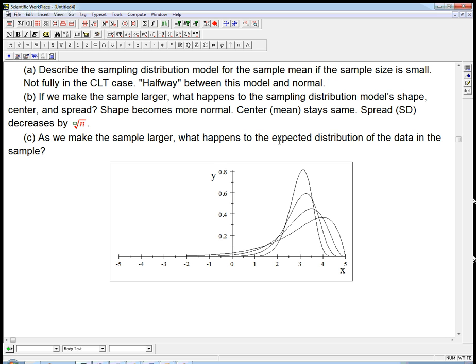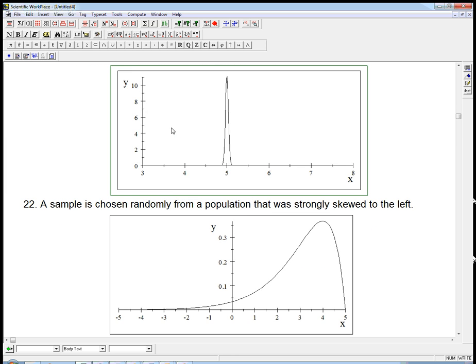Now, as we make the sample larger, what happens to the expected distribution of the data in the sample? This is a big distinction. They're not asking us about the sampling distribution of the mean anymore. They're actually saying, what's the expected distribution of the data in the sample? So if we take this population up here, suppose we took a really big sample size. Suppose we took like 10,000 samples from this distribution, and we didn't just look at the mean, that one number extracted out of it, we actually built a histogram of all the numbers in the sample. It's a lot more information. The central limit theorem does not apply to that.